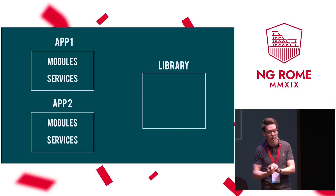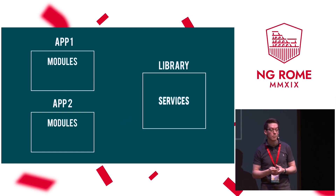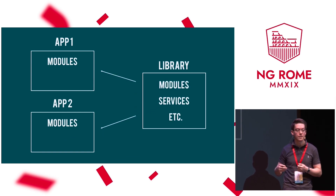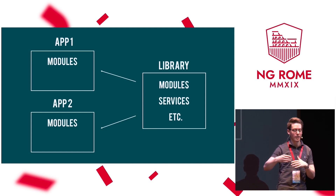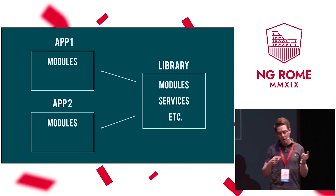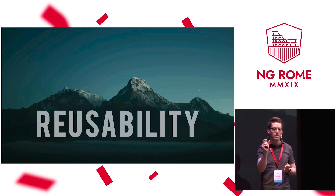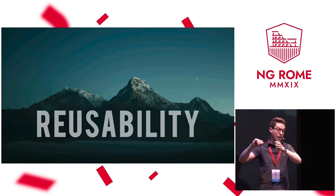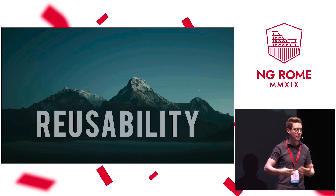We can add a library outside our applications — not just app one and app two, but as many applications as you want. We build a library outside your applications, move the service or components or modules in there, and then provide the functionality across applications by moving it out into the library, so we can share code over the borders of applications. The first answer to why we should do Angular libraries is reusability: you write code once and reuse it as many times as you want.